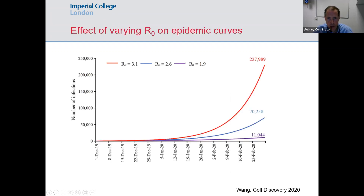R0 has quite a big impact on your epidemic curve. This modelling done very early in the SARS-CoV-2 pandemic shows that with different estimates of R0, over just a three-month window, you see a huge difference in outcomes: whether the R0 is 1.9 or 3.1 dramatically changes the number of cases at the end of that period.